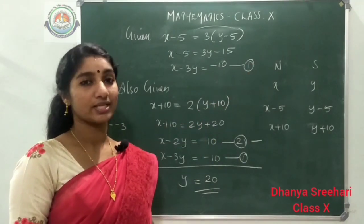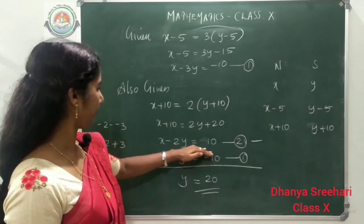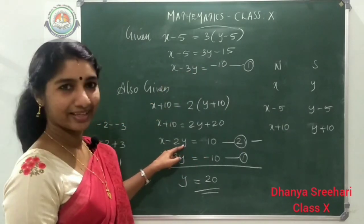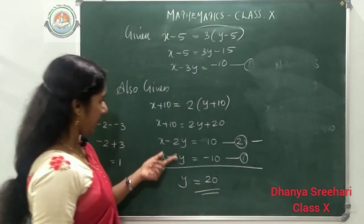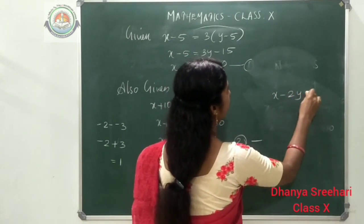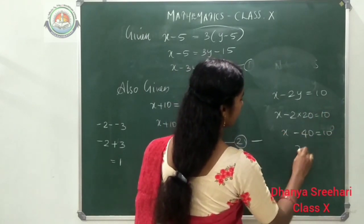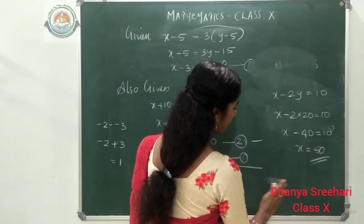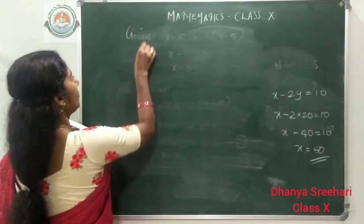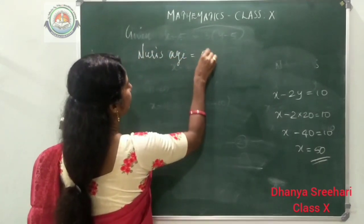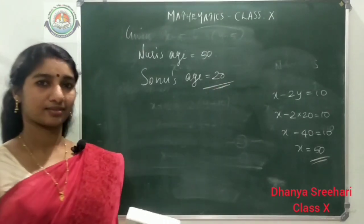Substitute y equals 20 into the second equation: x minus 2y equals 10. So x minus 2 times 20 equals 10, giving x minus 40 equals 10, and x equals 50. Nuri's age is 50 and Sonu's age is 20.